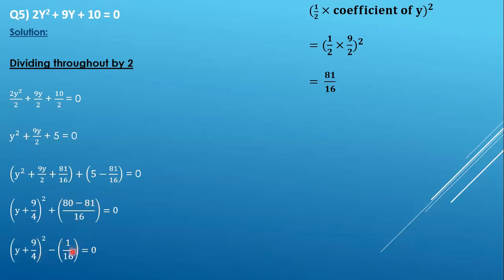80 - 81 gives us -1 and this 16 comes out with this. Now we will write that -1/16 in terms of square and we will send it to the right hand side. So we get 1/4 because 4 × 4 = 16. So (1/4)² and the negative sign will get cut off when we send it to the right hand side.